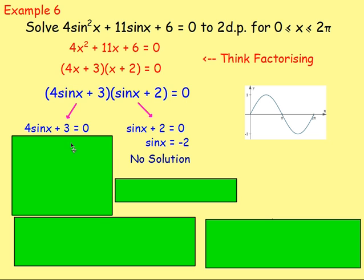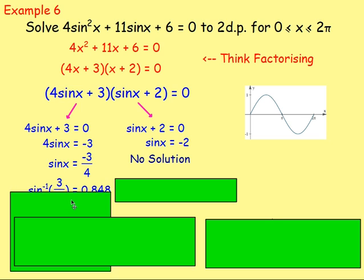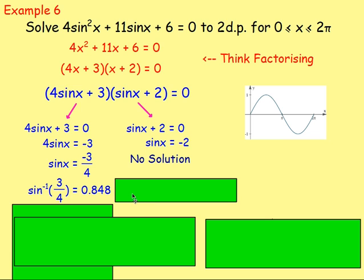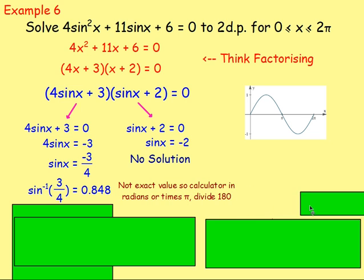With the left bracket, 4sinx + 3 = 0: subtract three, divide by four, giving sinx = negative three quarters. Do inverse sine — ignore the negative on the calculator, put in three quarters, do shift sine of three quarters. It'll give you an answer in degrees. To convert to radians, divide by 180 and multiply by pi. That gives you 0.848 — keep a few decimal places as it's not your final answer.